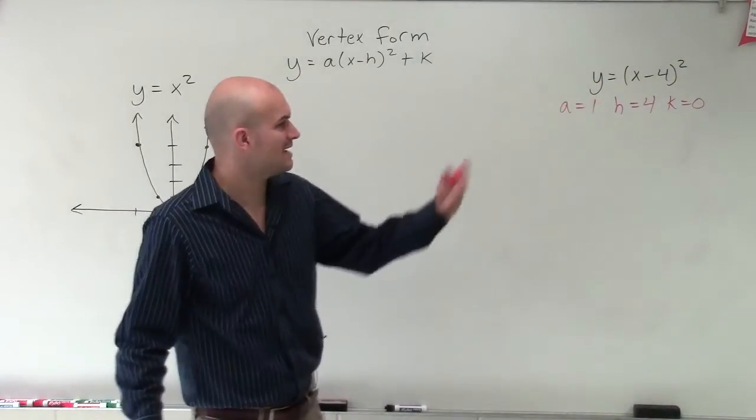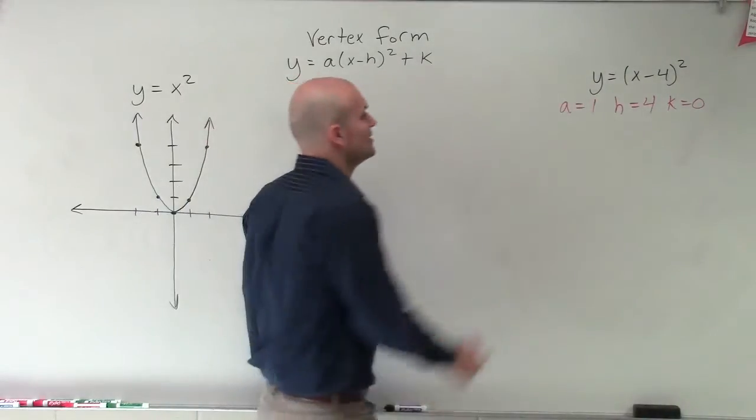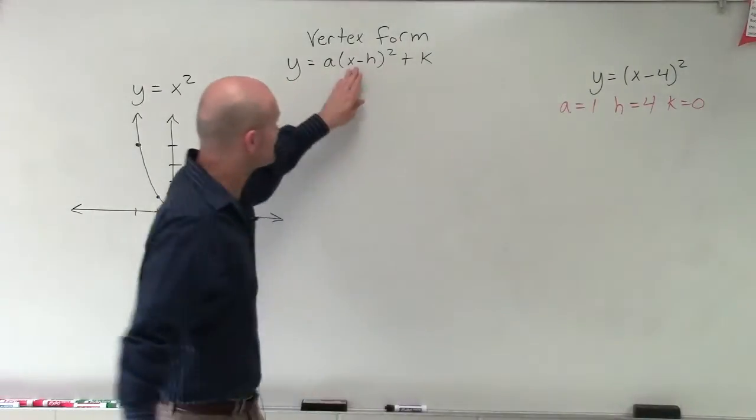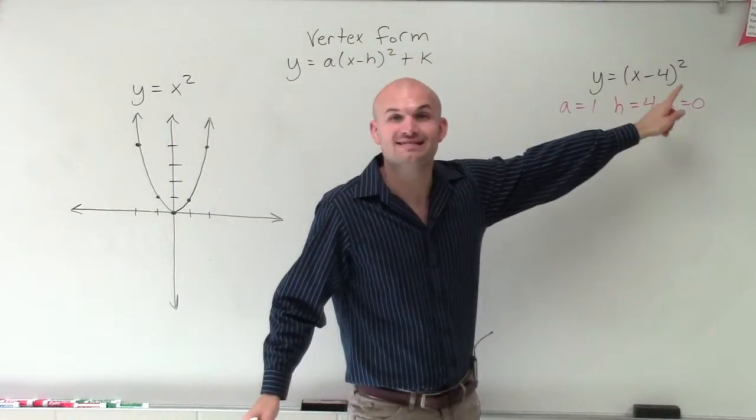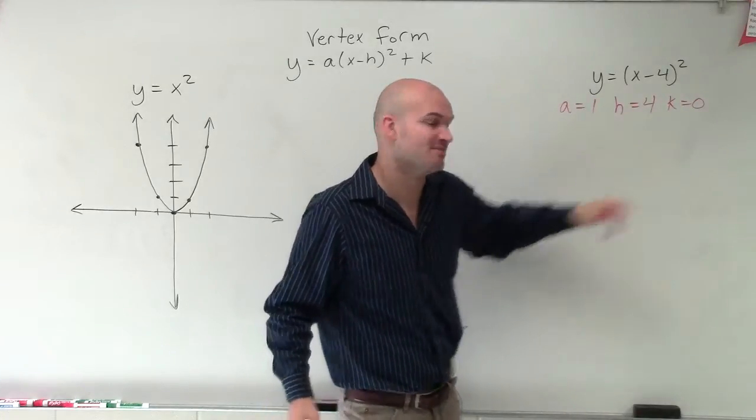Now, some of you might say, well, why is it? It's a negative 4 up there. You're right. But remember, it's x minus h. So I'm minusing h. Well, what am I minusing? I'm minusing the number 4. So therefore, h is going to be 4.